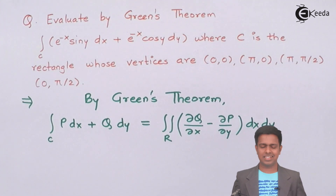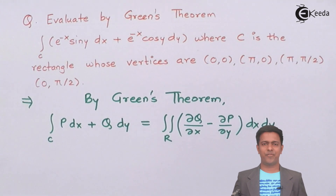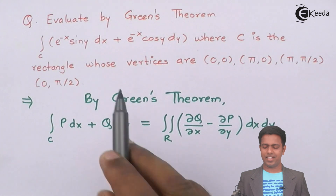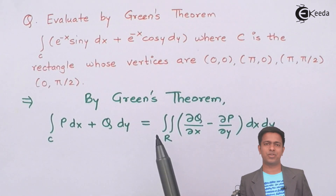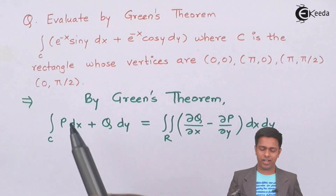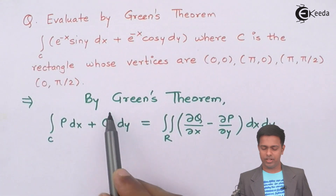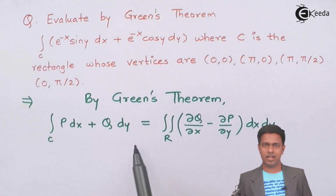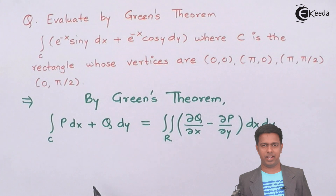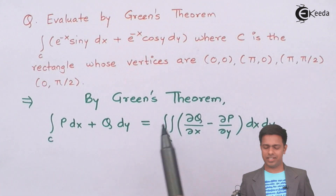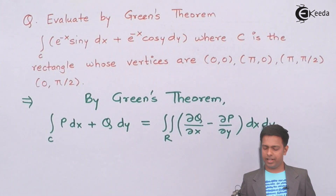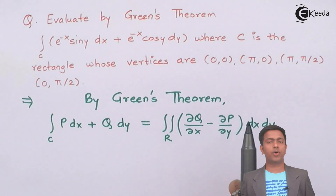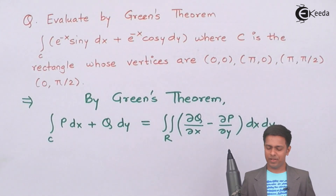This is Green's theorem. If you look at the given integral, it is in the form of P dx plus Q dy. Comparing this given integral with the left-hand side, we can get the values of P and Q. By Green's theorem, the value of this integral equals the double integral over the region where P and Q are functions of x and y.